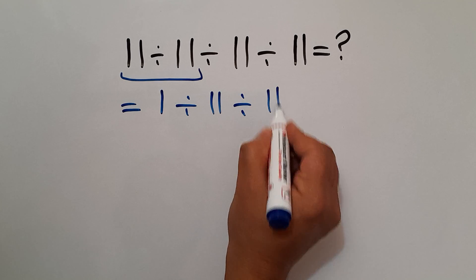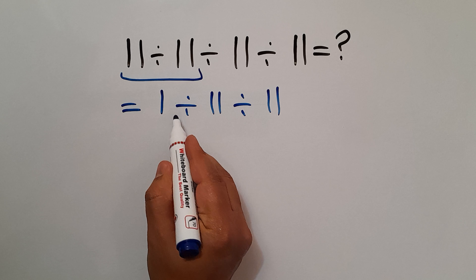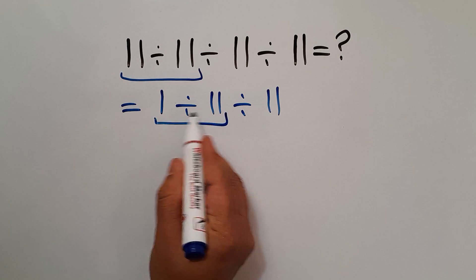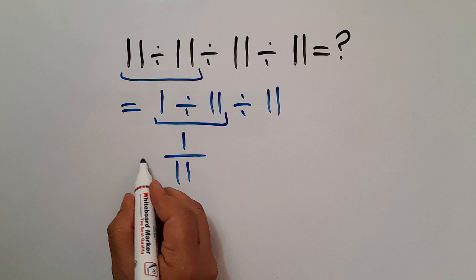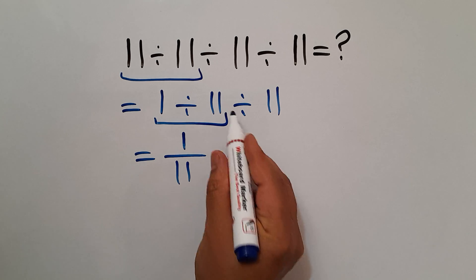Now this division, 1 divided by 11, we can write 1 over 11, and here we have divided by 11.